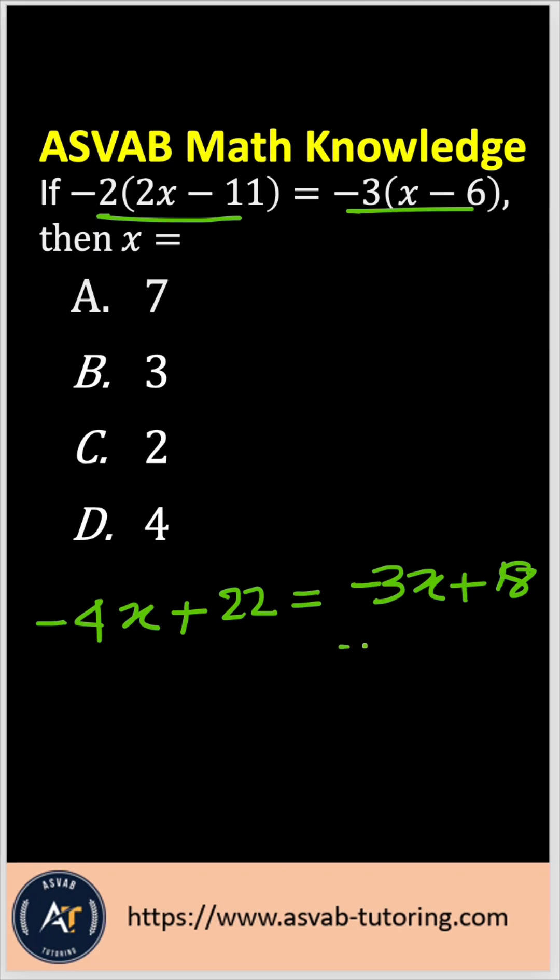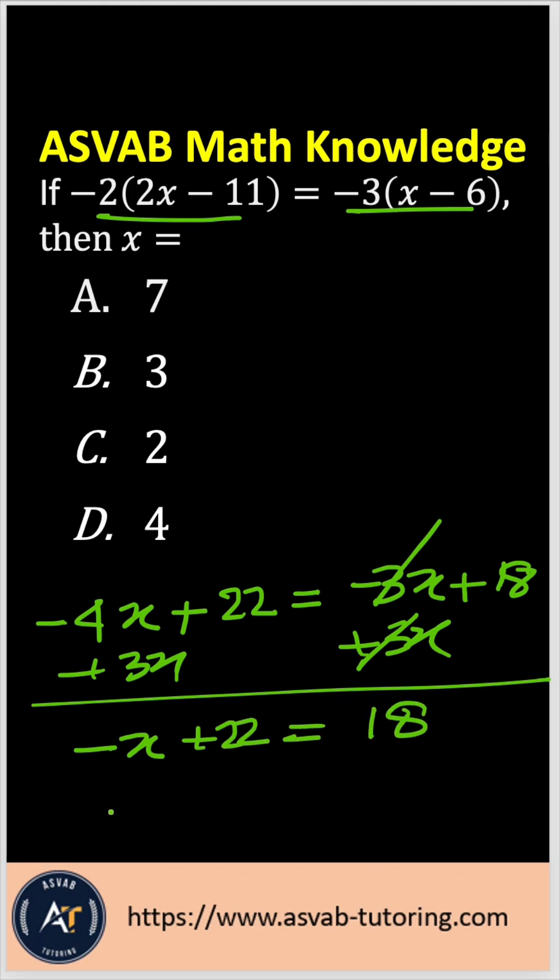So what do you have to do? You have to eliminate. Add both sides by 3x. So 3x, 3x cancel out here. So I have here -x plus 22 equal to 18, right?